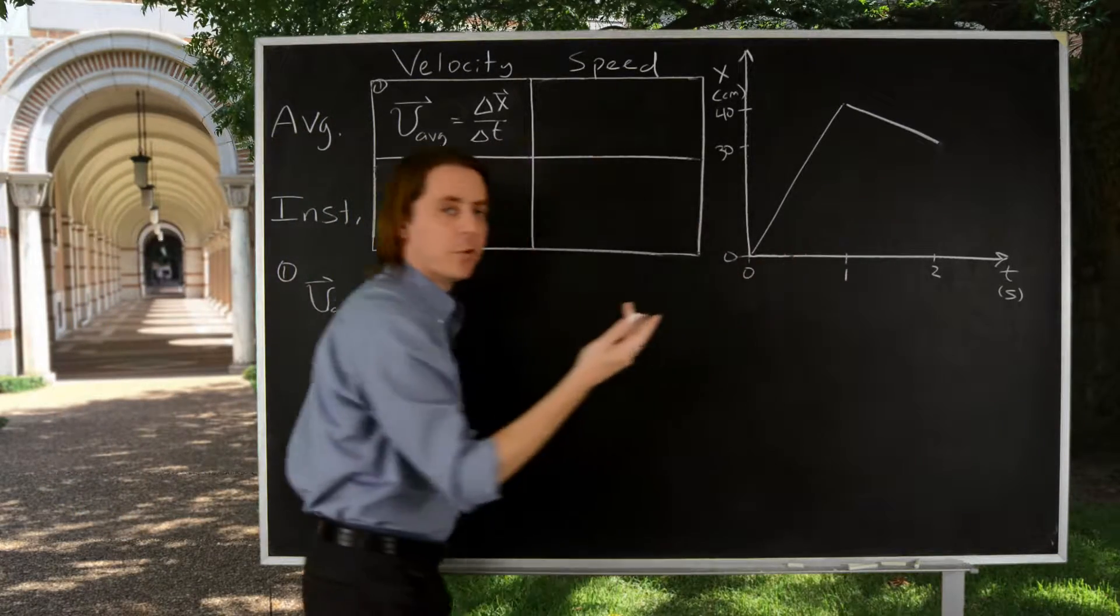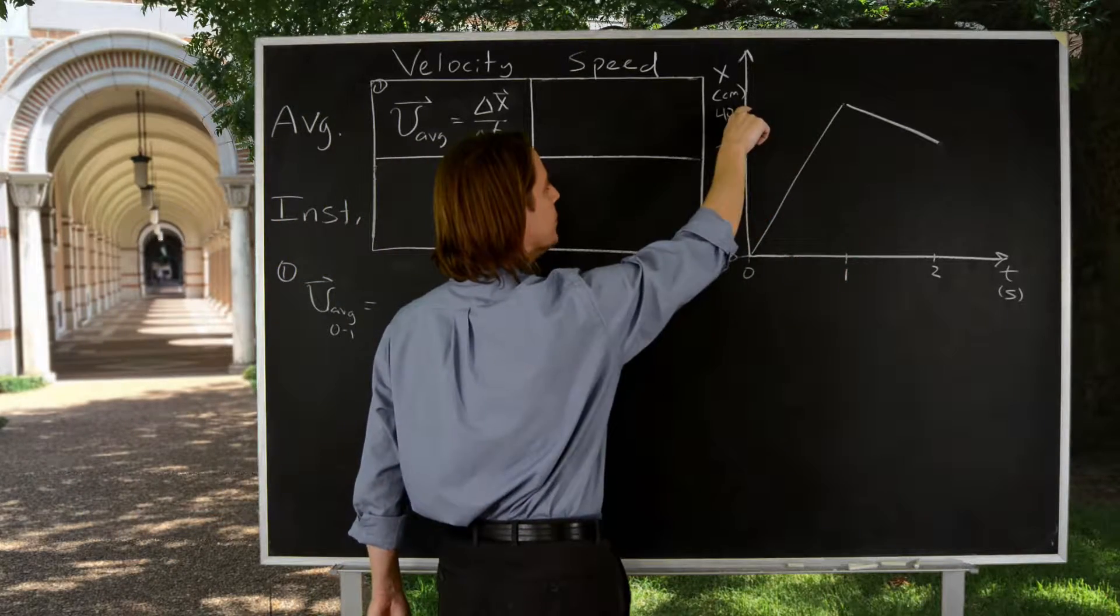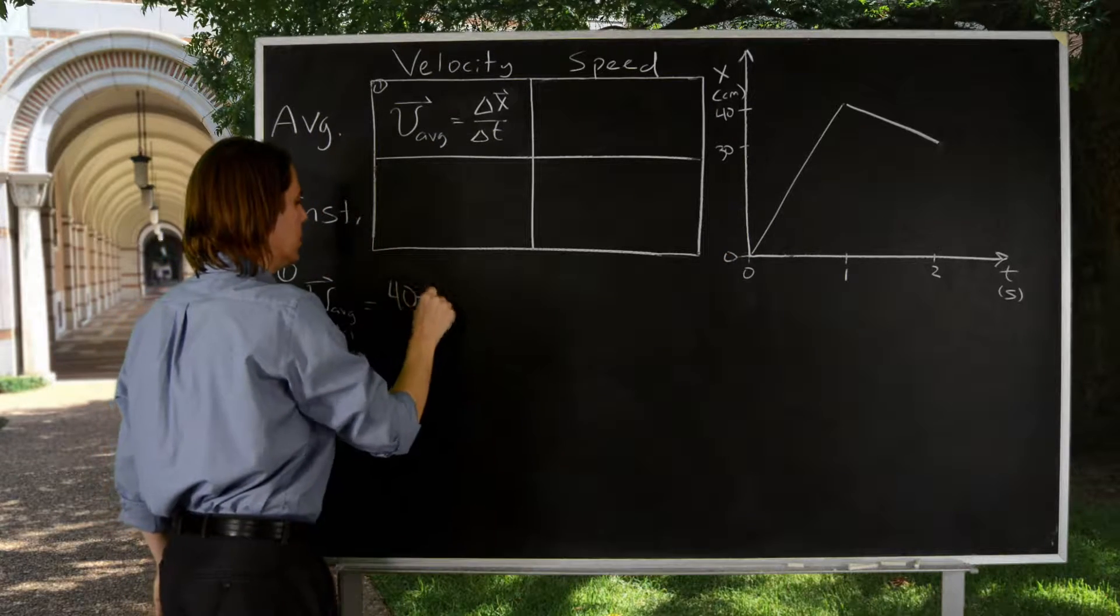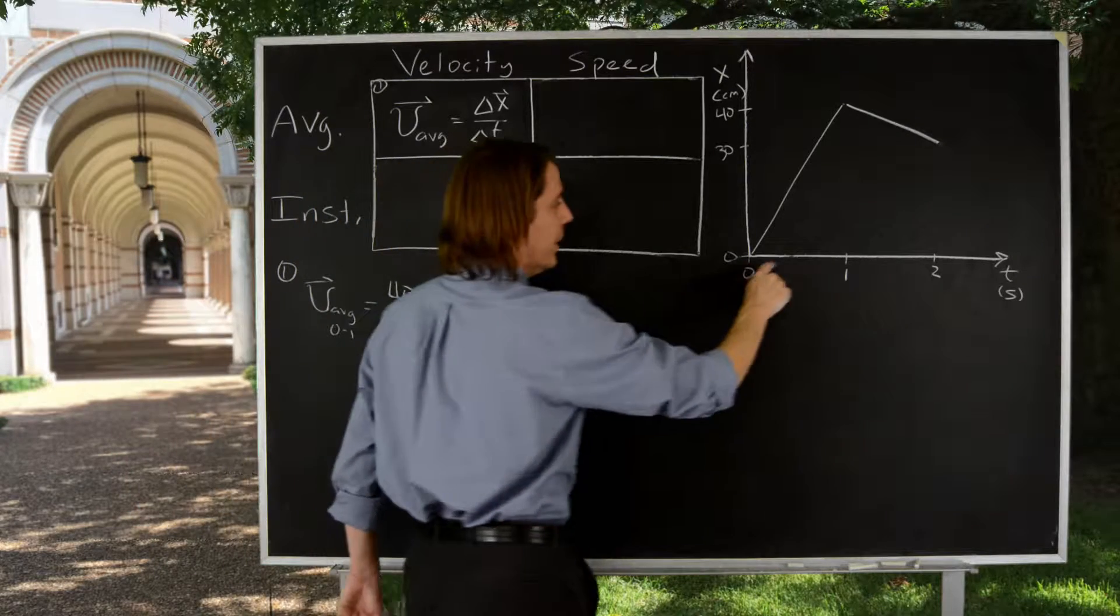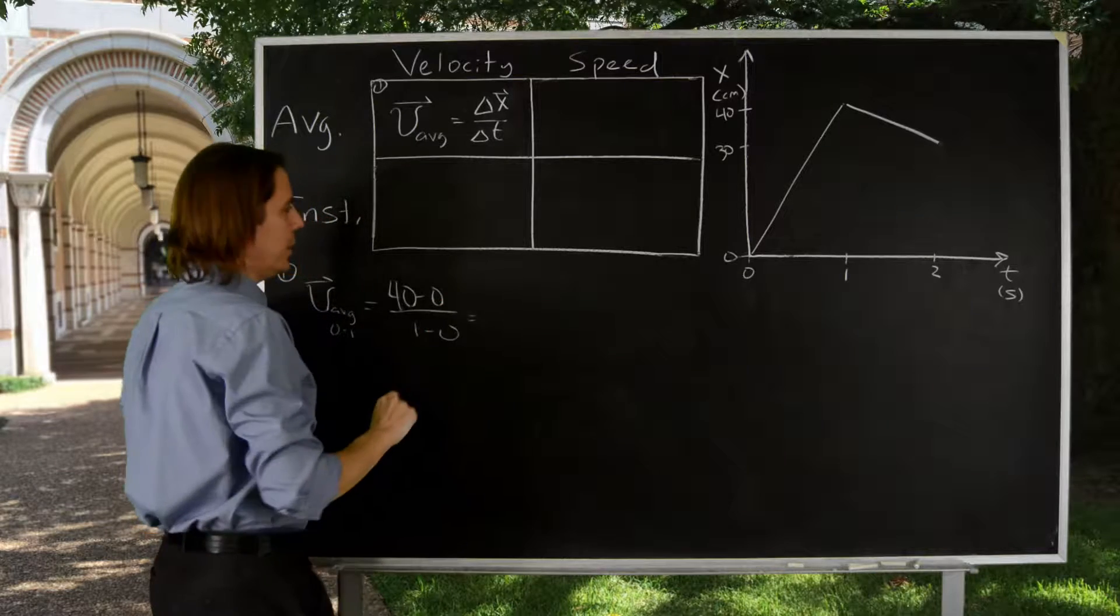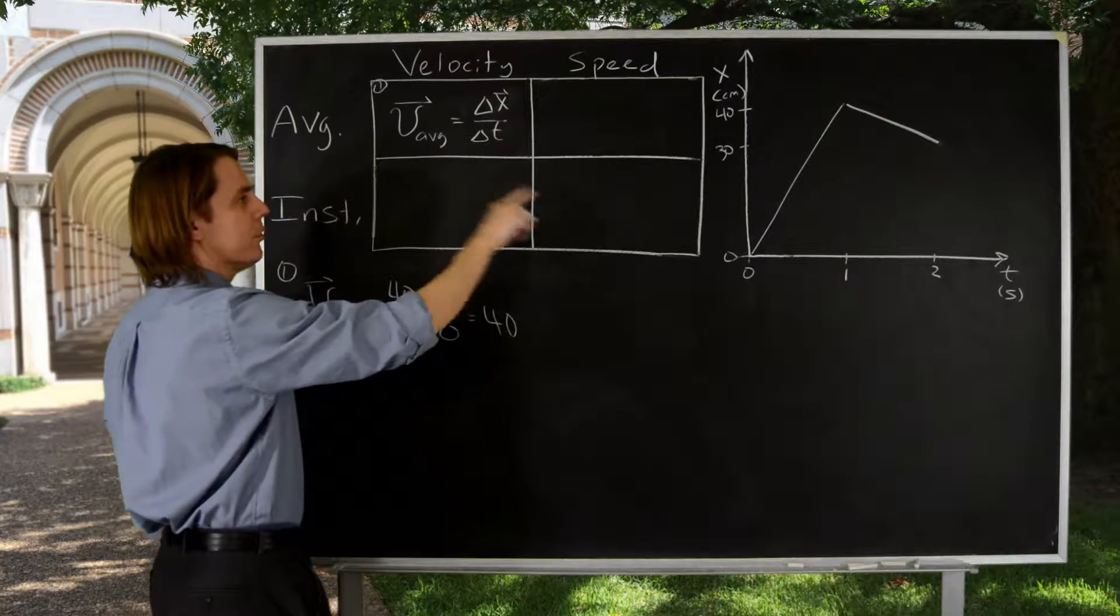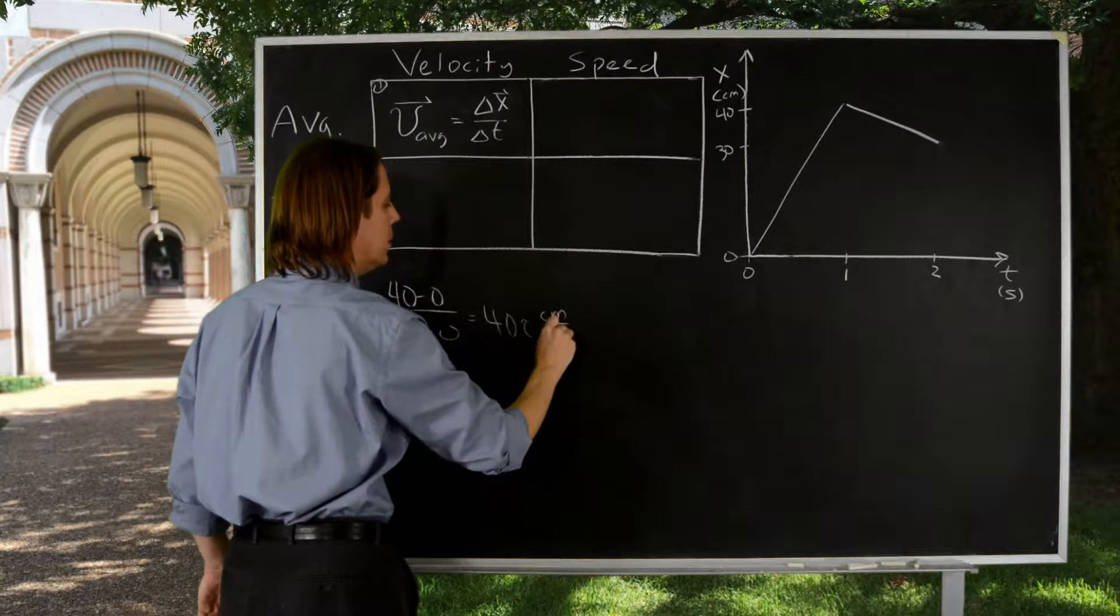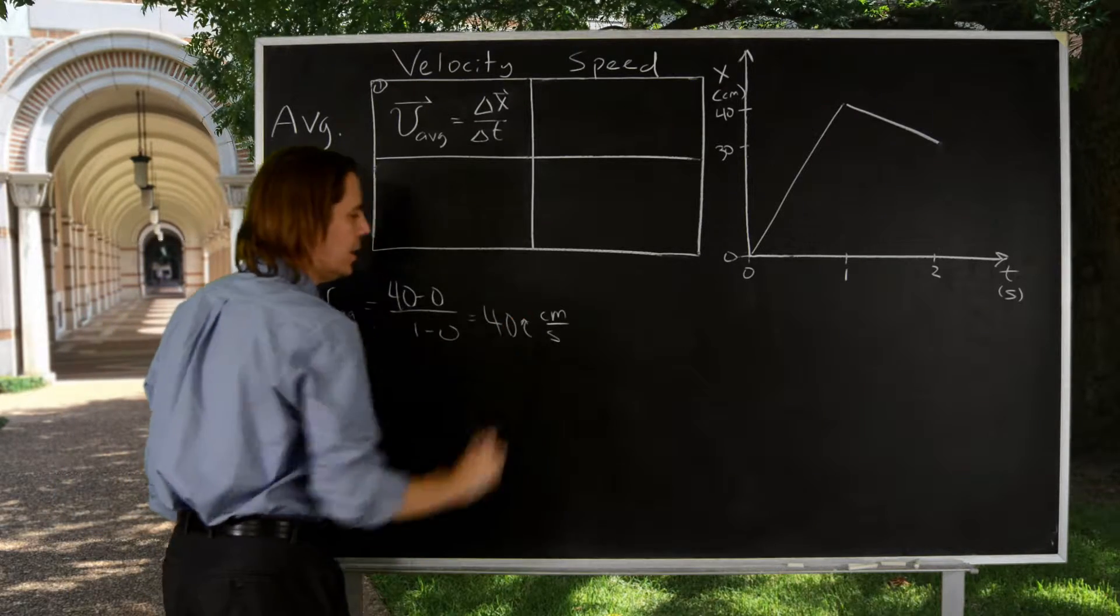From zero to one, displacement is just final minus initial. So the final is 40 centimeters, the initial is zero, so that's 40 minus zero, over delta T. The delta T is just one second, one minus zero. So it would be 40 i hat centimeters per second. That's the average velocity on that interval.